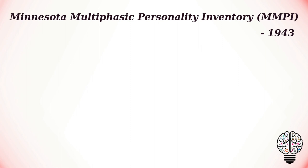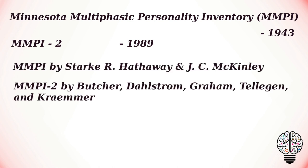One of the most widely used personality inventories is the Minnesota Multiphasic Personality Inventory, first published in 1943 with 504 true or false questions and updated to the MMPI-2 in 1989 with 567 questions. The original MMPI was developed by Stark R. Hathaway and J.C. McKinley, who were faculty at the University of Minnesota. The MMPI-2 was developed by Butcher, Dahlstrom, Graham, Tellegen, and Kaemmer.